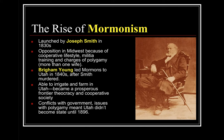The rise of Mormonism was launched by Joseph Smith in the 1830s. It received opposition in the Midwest due to its cooperative lifestyle, militia training, and charges of polygamy. After Joseph Smith was killed, Brigham Young led the Mormons to Utah in the 1840s. There they irrigated and farmed, becoming a prosperous frontier theocracy with government and religion closely aligned. Conflicts with the federal government over polygamy meant Utah didn't become a state until 1896.